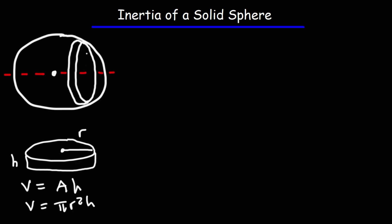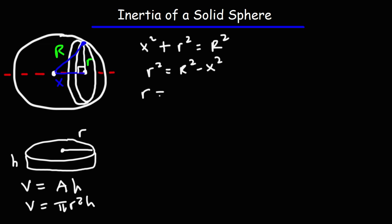In this problem, the distance between the center point and the edge of the disk is r, lowercase r. The distance between the center of the sphere and the center of the disk is going to be x. And the distance between the center of the sphere and the edge — that is going to be the radius of the sphere. So what we have here is a right triangle. Using the Pythagorean theorem, x² + r² = R², so solving for little r squared: r² = R² − x².